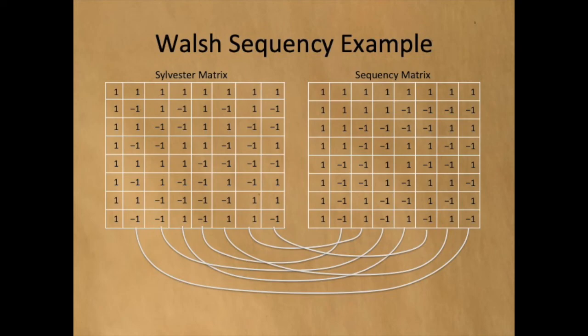This Walsh matrix is the Sequency matrix because the columns are ordered by the number of transitions. Each column has a Sequency from 1 to 7.